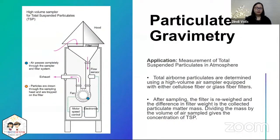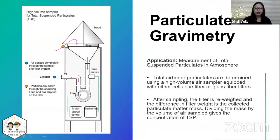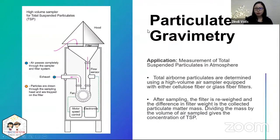The last application under particulate gravimetry is the measurement of total suspended particles in the atmosphere. You use a high volume sampler with a pre-weighed filter and normally collect the air sample for 24 hours. After that, you weigh the filter, and the mass of the suspended particles gives you the concentration of TSP in the atmosphere.